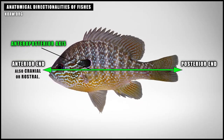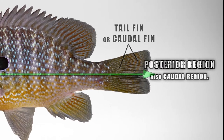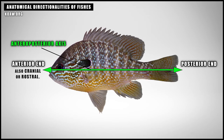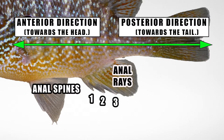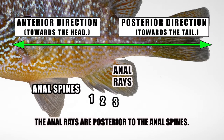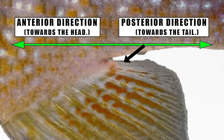Posterior describes the direction towards the rear of the fish. The posterior region of a sunfish is also called the caudal region, as that is where the caudal fin, or tail fin, is located. Posterior may also be used when describing features that aren't on the tail fin. On the anal fin previously discussed, the anal spines are anterior on this fish, while the soft rays are posterior to those anal spines, or directionally situated towards the rear of the fish. The last anal ray is considered the most posterior ray of the anal fin.